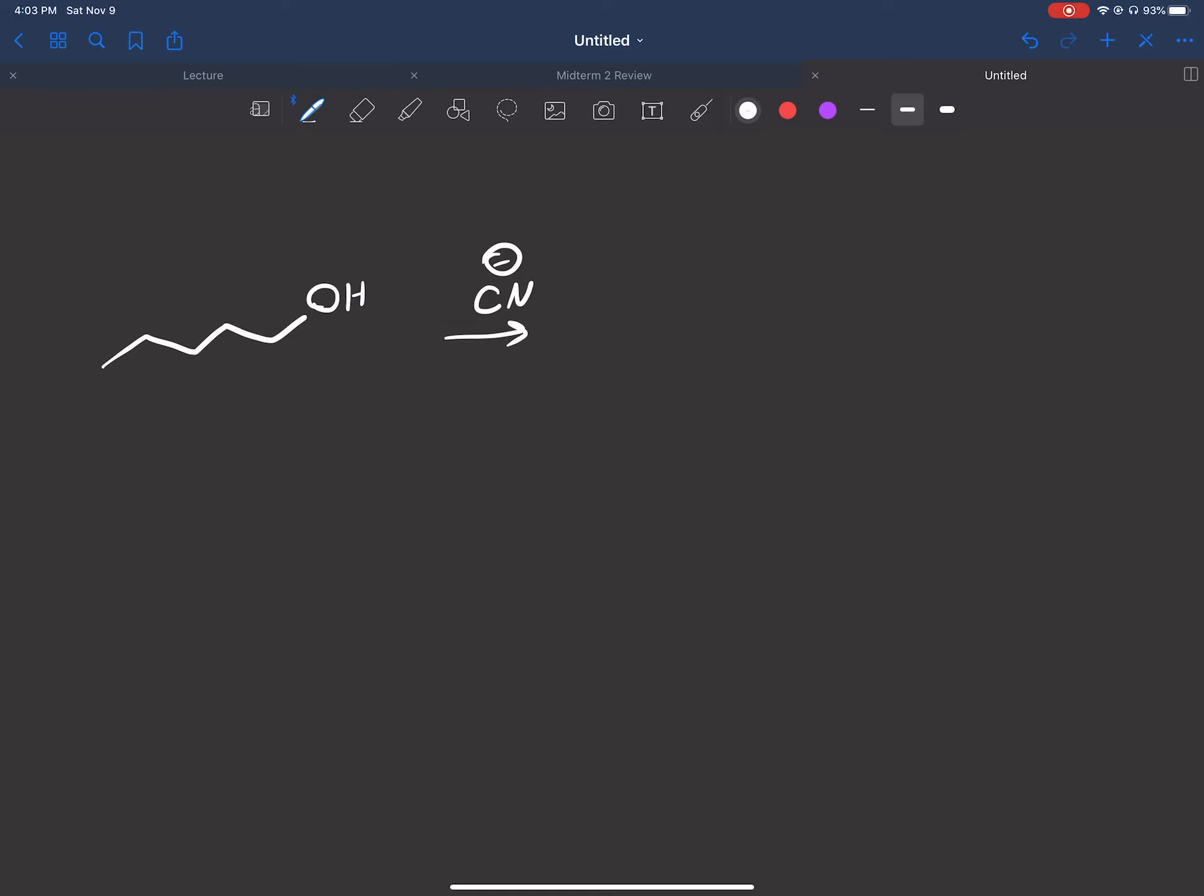First thing is to identify our leaving group, which is our alcohol, and it's on a primary carbon. So we can rule out any of the carbocation reactions, E1 or SN1. And now we have to think of E2 or SN2. Well, SN2 is really good in a primary leaving group, but we can go E2 if we have a bulky base. In this case, we are reacting with CN minus, which is a good nucleophile and a weak base. So we're going to go with the SN2 route. So let's try to draw what the SN2 is going to look like. It attacks that carbon, kicks out the OH.